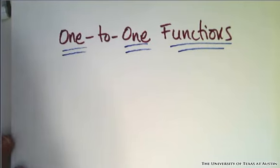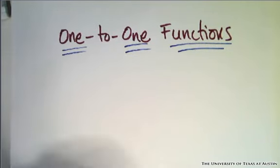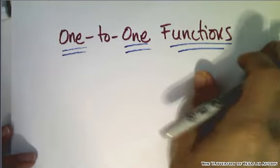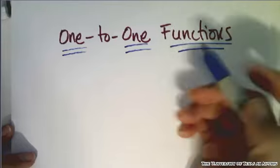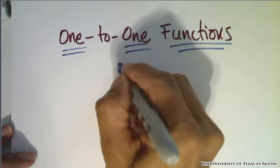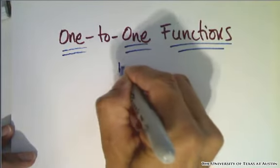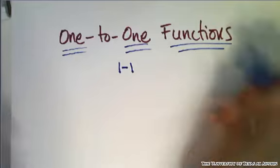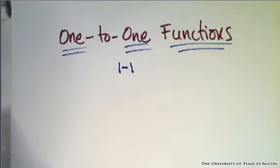We're going to talk about one-to-one functions. The notation we often use to talk about one-to-one functions is this: one-to-one. So let's start with the definition.